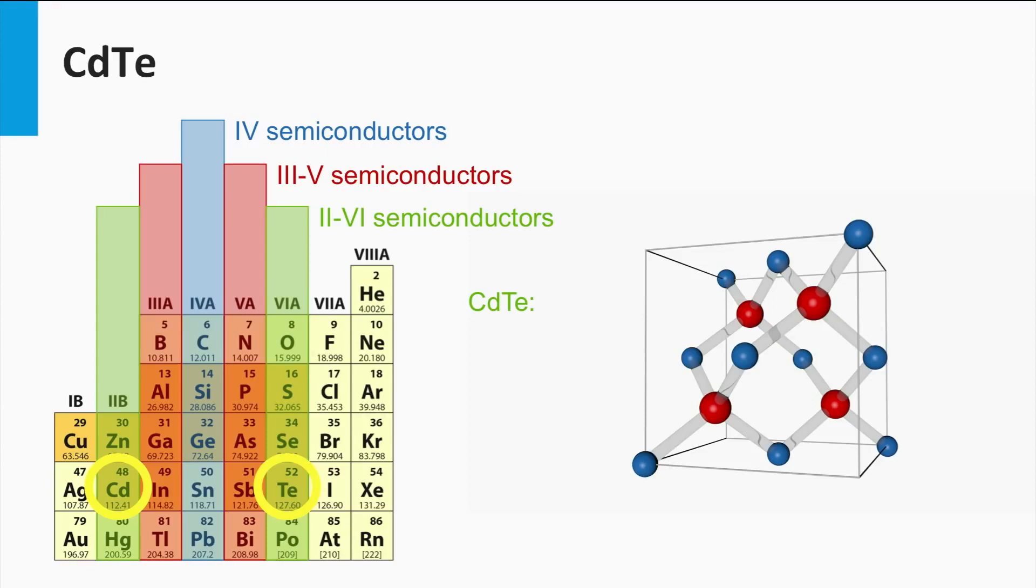The band gap of cadmium telluride is 1.44 eV, a value which lies within the optimal range of band gaps for a single junction solar cell.